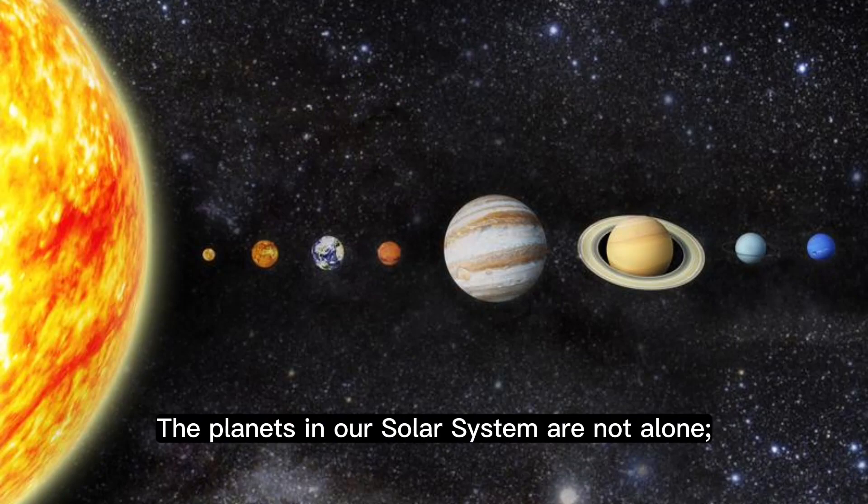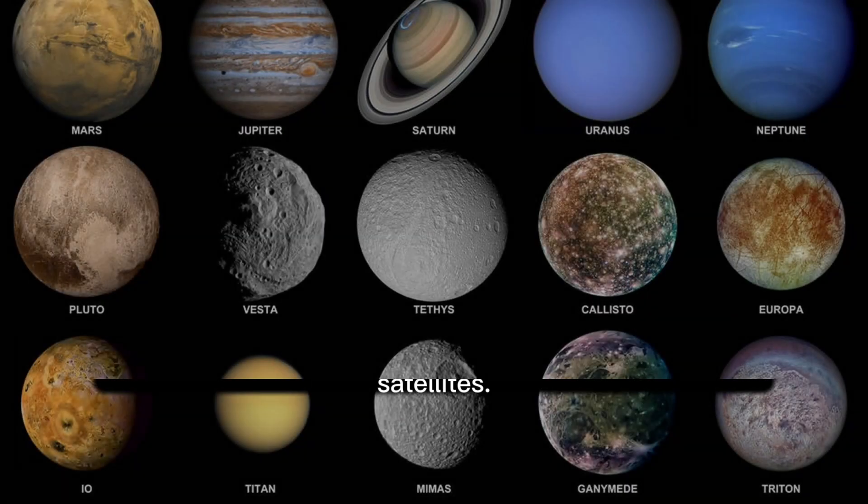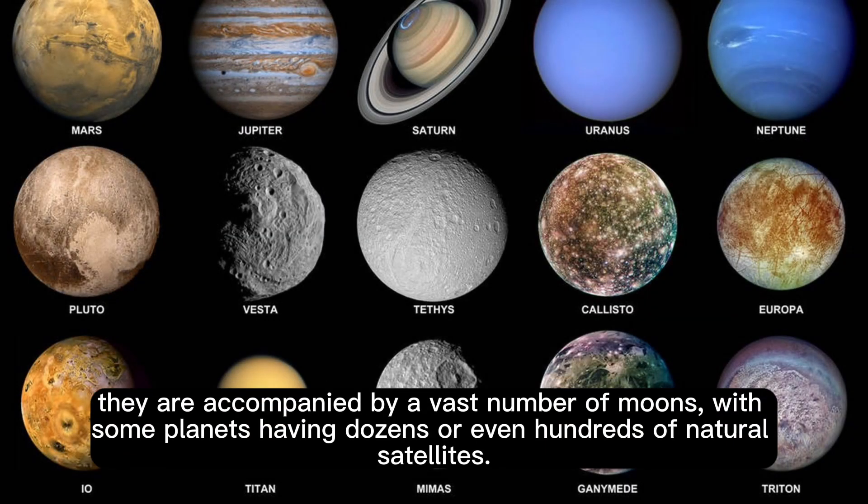The planets in our solar system are not alone. They are accompanied by a vast number of moons, with some planets having dozens or even hundreds of natural satellites.